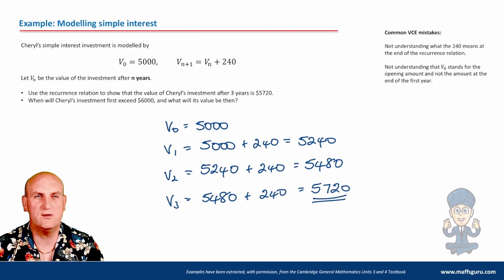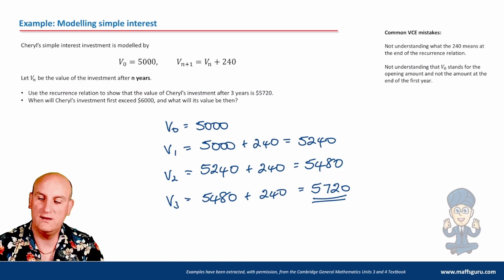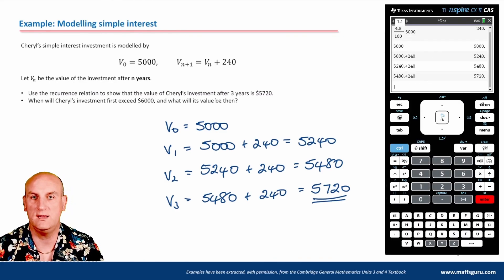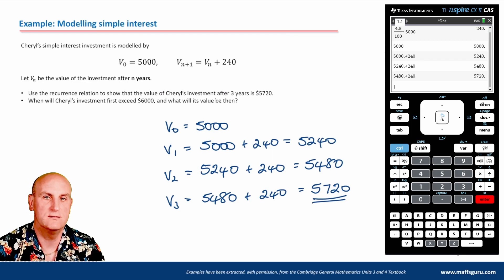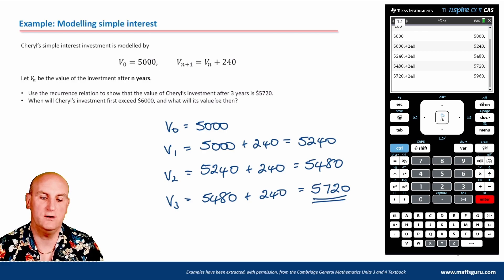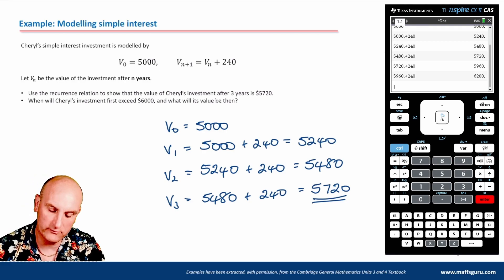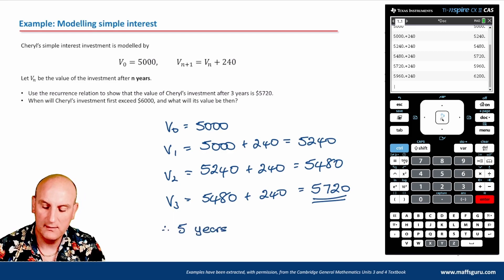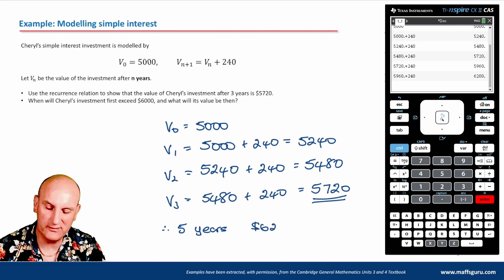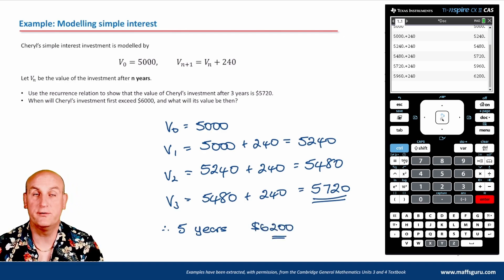When will Cheryl's investment first exceed $6,000? We've already done the hard work. After three years: $5,720. After four years: $5,960. After five years: $6,200. Therefore the answer is five years, and she would have $6,200.